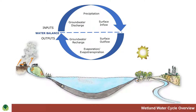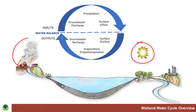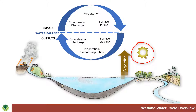Wetland Water Cycles. Wetland is very much influenced by the balance between evaporation and precipitation. Evaporation, of course, is the movement of water out of the wetland up into the atmosphere.